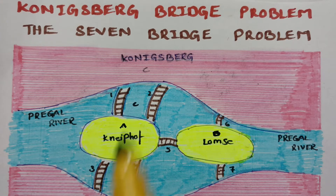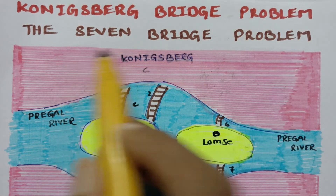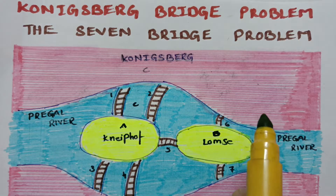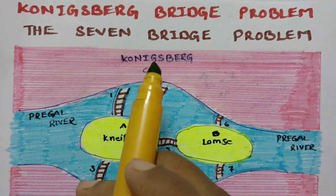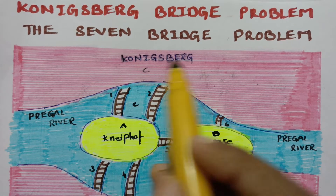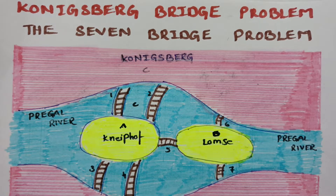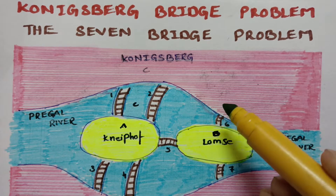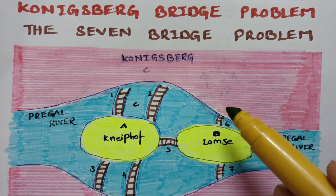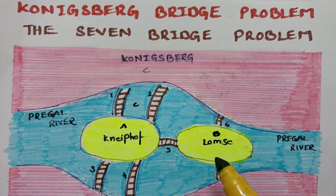Today's video is on the Königsberg Bridge Problem, also known as the 7 Bridge Problem. Königsberg is a town, presently known as Kaliningrad, situated in Lithuania, which was separated from the USSR in 1991.